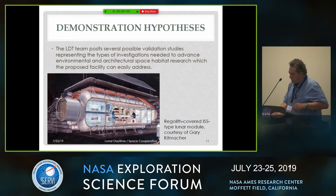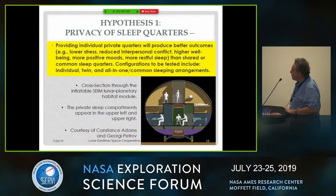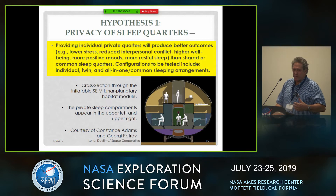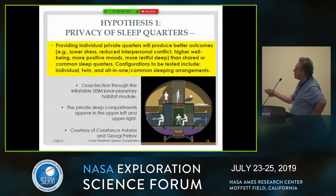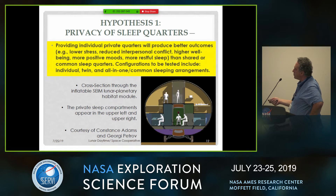We have put together several hypotheses as examples of the types of investigations we would pursue. Hypothesis one: the privacy of sleep quarters. A lot of people will say this is just common sense, but in fact NASA does not act like we know this. The hypothesis is that providing individual private quarters will produce better outcomes, such as lower stress, reduced interpersonal conflict, higher well-being, more positive moods, and more restful sleep than shared or common sleep quarters. We would test multiple different configurations.